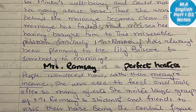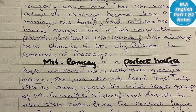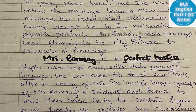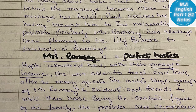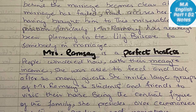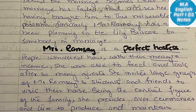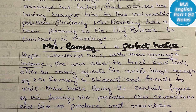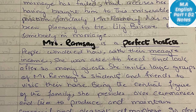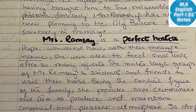This becomes clear after the marriage has failed. Paul accuses her of having brought him to this miserable position, forcing him into marriage. Similarly, Mrs. Ramsey has always been planning to tie Lily Brisco to somebody in marriage, and she was always planning for this.